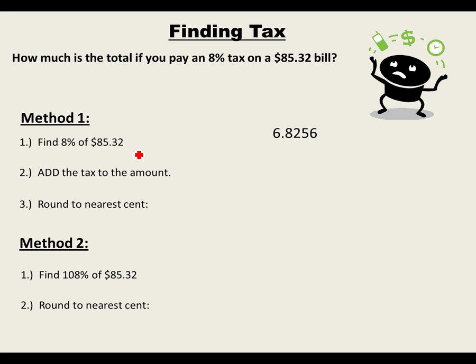My calculator gives 6.8256. Now you might be tempted to round that to $6.83, but I wouldn't round it yet — just keep it as is. It's a good idea not to round things while you're still working through a problem.